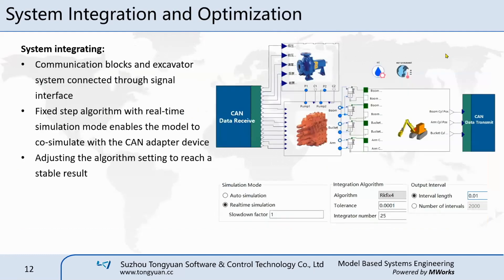For the system integration process, the signals are packed into communication blocks and are connected with the excavator system model. For the model to co-simulate with the CAN adapter device, a fixed-step algorithm must be applied. Here we have tried RKFIX4 and other fixed-step algorithms to test the system robustness. To reach a stable result, adjusting the algorithm setting is necessary for different platforms. By setting the real-time simulation slowdown factor, the model will run in accordance with the system clock frequency. Adjusting the integration step count together with the interval length helps to balance the performance and precision of the model.